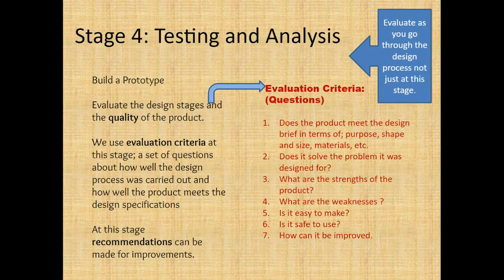Stage four is testing and analysis. In this stage you're going to build your initial prototype. You're going to evaluate the design stages and quality of the product. We use evaluation criteria — a set of questions about how well the design process was carried out and how well the product meets the design specifications. At this stage, recommendations can be made for improvements. With all these stages, you can always go back and improve or change steps from the previous stages.